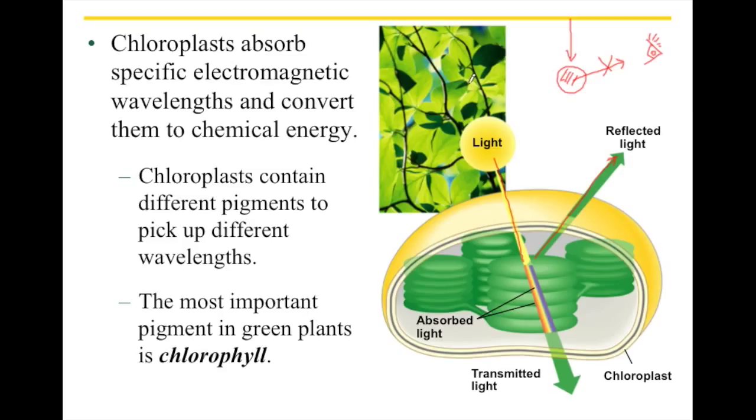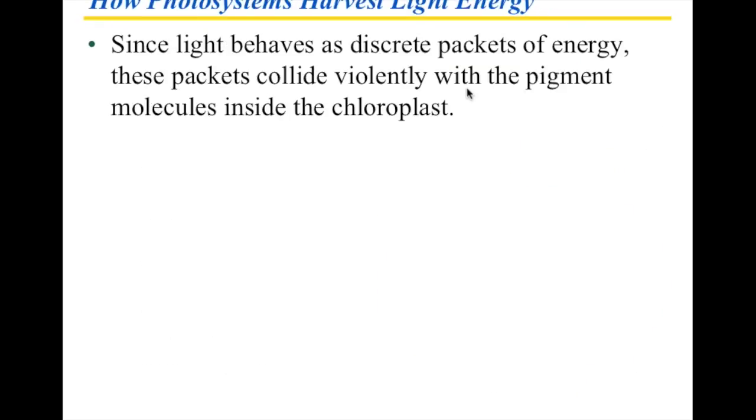It absorbs everything else, but not green. So we're not interested in green light. Green light does not help us photosynthesize. If you had a plant and you were to shine green light on it, it would not photosynthesize because it can't deal with green light. So how does this work? How do photosystems actually work?